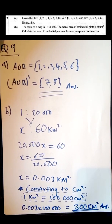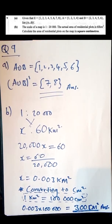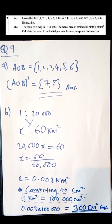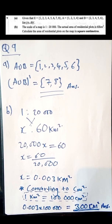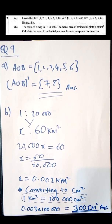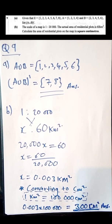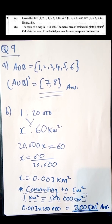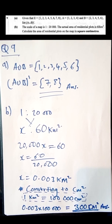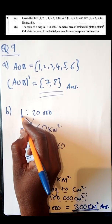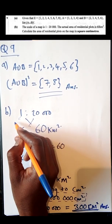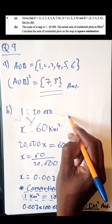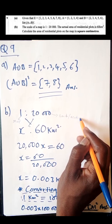Question 9B is under scale drawing, where you deal with large numbers. Bear in mind that in paper one we don't use a calculator. The scale of a map is 1 to 20,000. The actual area of the residential plots is 60 km². Calculate the area of residential plots on the map in square centimeters.